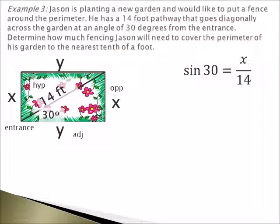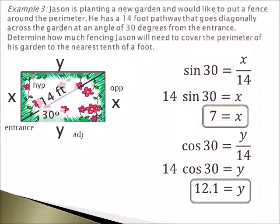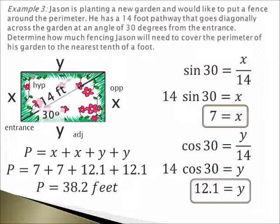So let's begin with solving for x. Here we're going to take sine of our angle, which is 30 degrees, and this is going to equal opposite, which is x, divided by the hypotenuse, which is 14. We will then cross multiply in order to get x is equal to 7. Now let's solve for y. Here we have cosine of 30 is equal to y divided by 14, and then after we cross multiply we will get y is equal to roughly 12.1. Now in order to find the perimeter you must add all four sides: 7 plus 7 plus 12.1 plus 12.1 is roughly 38.2 feet to the nearest tenth of a foot. So therefore Jason will need about 38.2 feet of fencing in order to cover the perimeter of the garden.